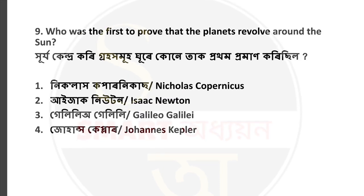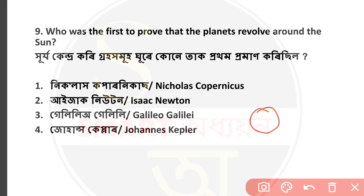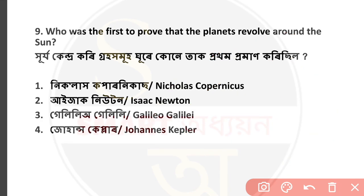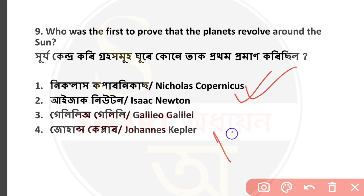Question number 9: Who was the first to prove that the planets revolve around the sun? The answer is Option number 1 — Nicolaus Copernicus was the first to prove that planets revolve around the sun. He proved this in 1543.